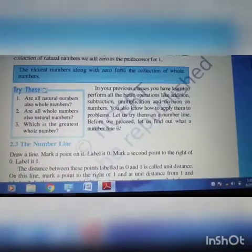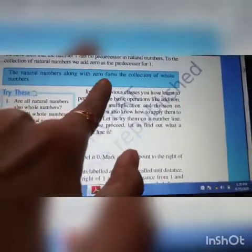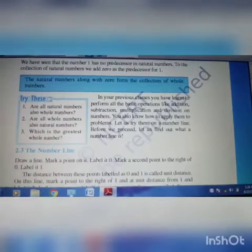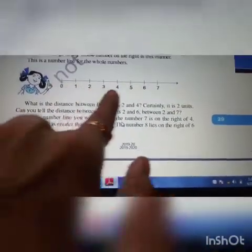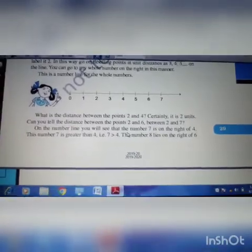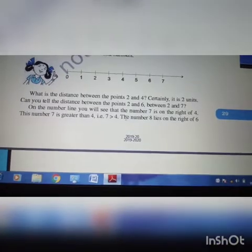See the definition of whole number. Natural numbers along with 0 form the collection of whole numbers. Next they have given how to represent the whole numbers on the number line. 0, 1, 2, 3 etc. Like that. It starts from 0.